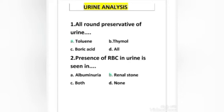Presence of RBC in urine is seen in: albuminuria, renal stone, both, none. Right answer is option B, renal stone.